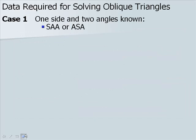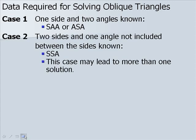Let's look at data required for solving oblique triangles. First, case one: you need one side and two angles to be known. We can use side-angle-angle or angle-side-angle. Case two: two sides and one angle not included between the sides is known — side-side-angle.